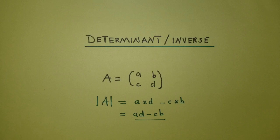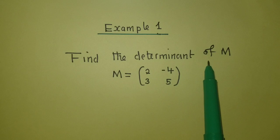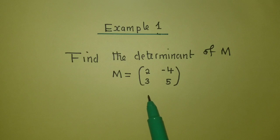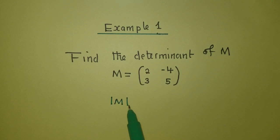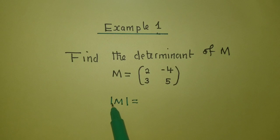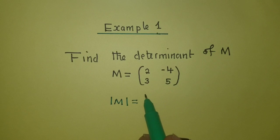Let's try an example. For example number one, we've been asked to find the determinant of matrix M. You first copy the letter representing the determinant — in this case it's M — and then put it inside the bars. These bars mean determinant. Then you start multiplying the major diagonal minus the multiplication of the minor diagonal.